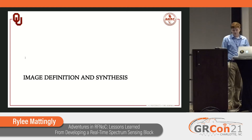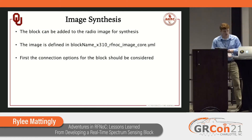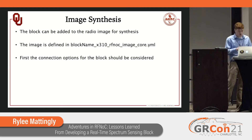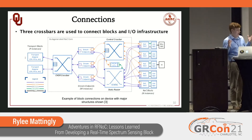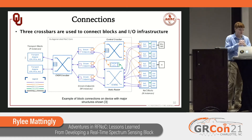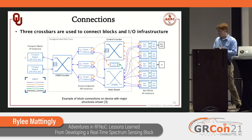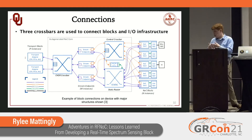How do we define the image and synthesize it? The block can be added to an image for synthesis in the image_core.yaml file. There are three crossbars in RF-NoC; two of them are important for the data plane. You have your static router, which at synthesis time connects all the blocks together — if you connect two blocks inside the static router, they can't be changed at runtime.